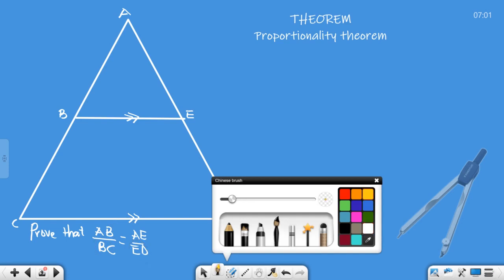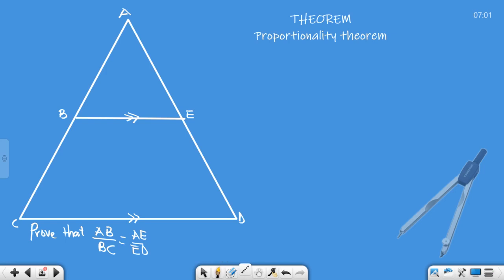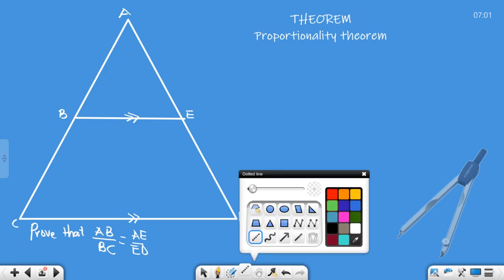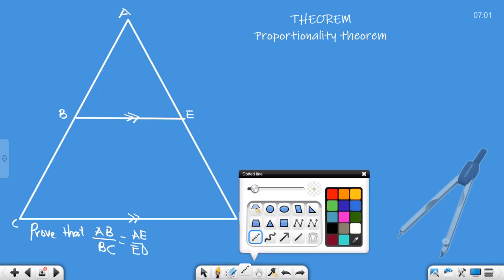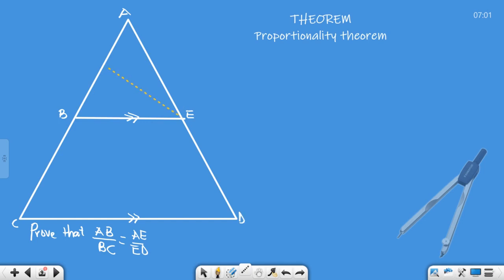We're going to construct a height. AB is the base, so from the base to the vertex would be the first height. Then BC is also another base, an extended base. Let's call this h1 and let's call this h2. Your height is always perpendicular.